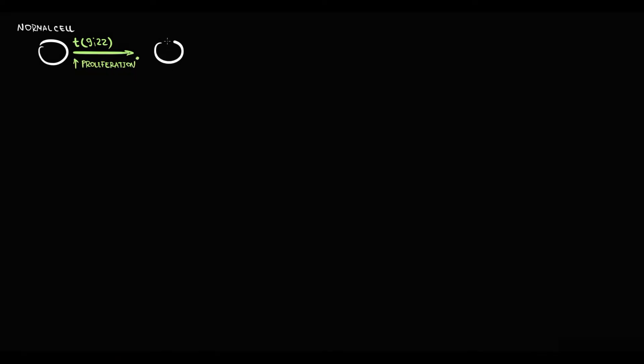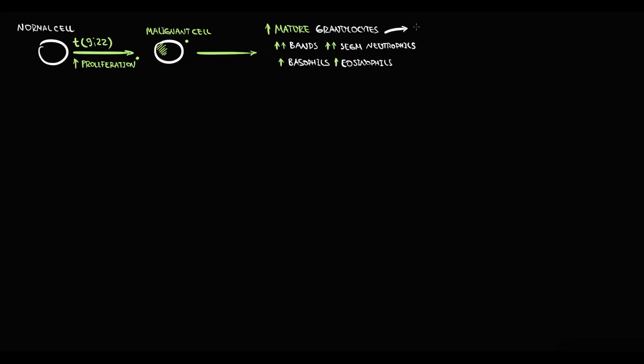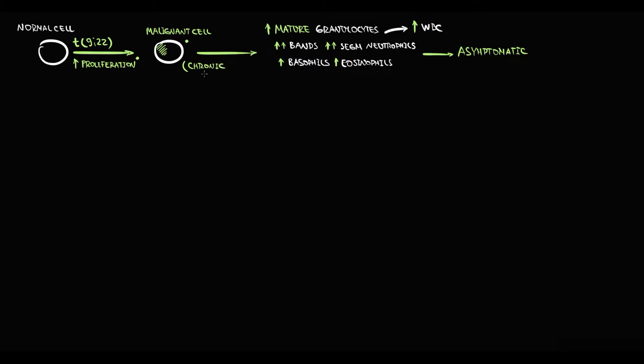Recall that chronic myeloid leukemia has three phases. The first mutation causes a reciprocal translocation between chromosomes 9 and 22, resulting in a significant increase in the proliferation of granulocytes. As a result, the amount of mature granulocytes in the blood markedly increases, causing an increase in total white blood cell count. However, this overproduction of mature granulocytes does not cause any significant symptoms, and this stage is called the chronic stage of chronic myeloid leukemia.